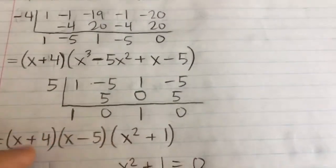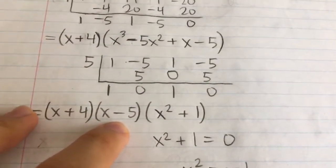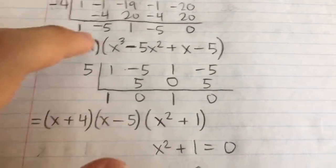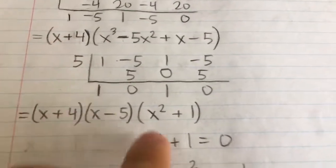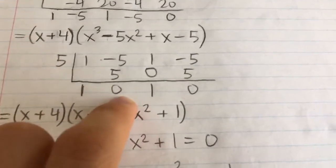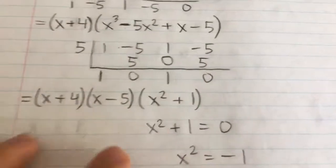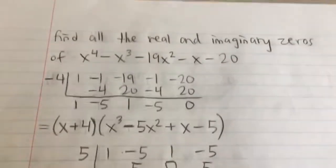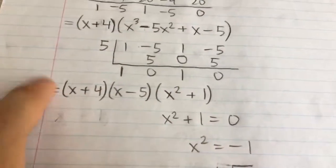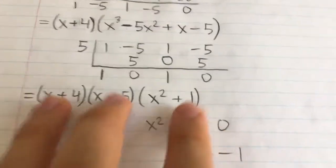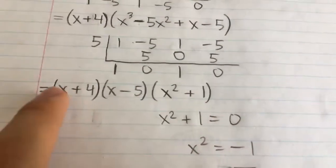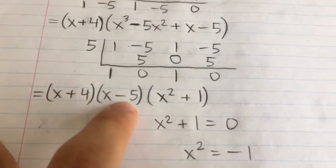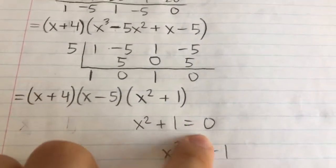And so that means we can factor out x minus 5. And what we're left with is, again, it's 1 power down. So it becomes x squared. There's no x term, it's zero. And then plus 1. So here are three factors that this polynomial factors into. And so if we set this equal to zero, then either one of these has to be zero. So you can see x equals negative 4, x equals 5, and x squared plus 1 equals 0.